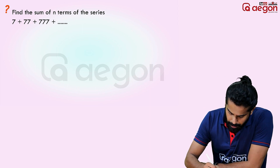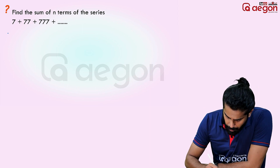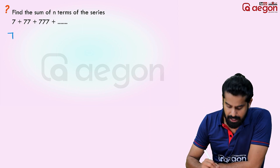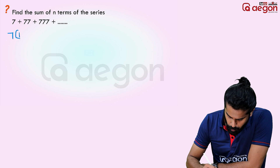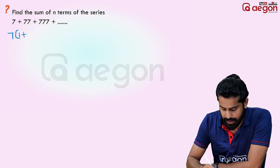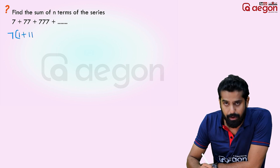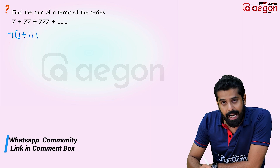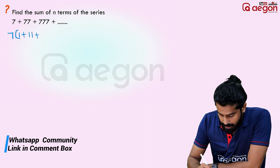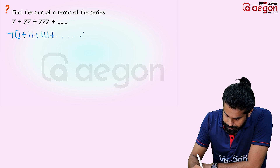So the first step is, we will find a common factor. 7 is common — 7, 77, 777 are all written the same way. We factor out 7. This is the first step.